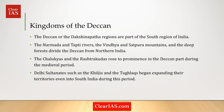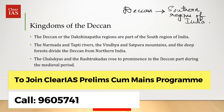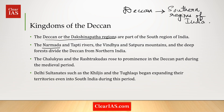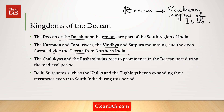The term Deccan signifies the southern regions of India, also referred to as the Dakshinapatha regions. The rivers Narmada and Tapti, the Vindhya and Satpura mountains, and deep forests divide the Deccan from north India. During medieval India, it was the Chalukyas and Rashtrakutas that rose to prominence and controlled that part of India. Delhi Sultanates like the Khiljis and the Tughlaqs also began expanding their territories to southern regions during this period.